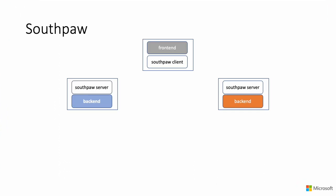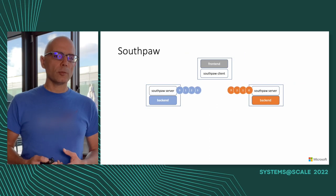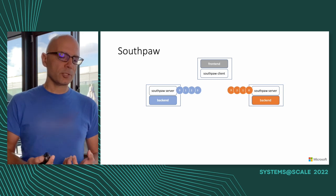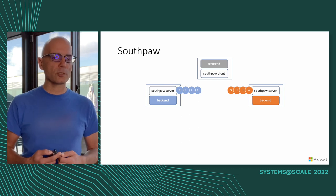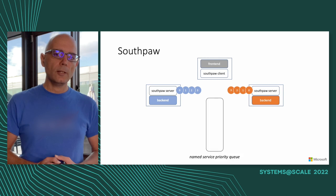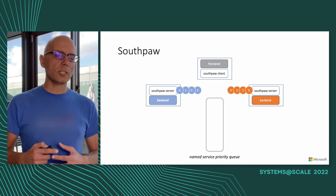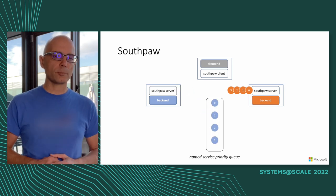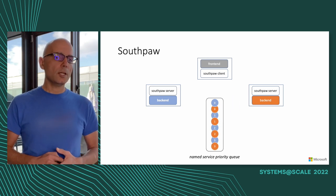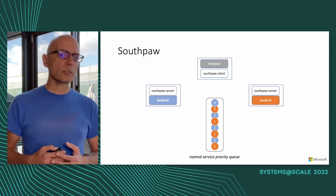Southpaw models workloads in terms of tokens. For example, a container with resources allocated for four requests in parallel issues four tokens, telling everyone it's able to service four different requests at the same time. Every token has another attribute called a priority — indicated by the small numbers you see. In Southpaw, priority indicates an issuer's eagerness for a particular token to be used. Tokens with higher priority are used first, and tokens with lower priority are used last. All tokens issued from containers for a given service are placed on a distributed priority queue, ordered according to their priorities.